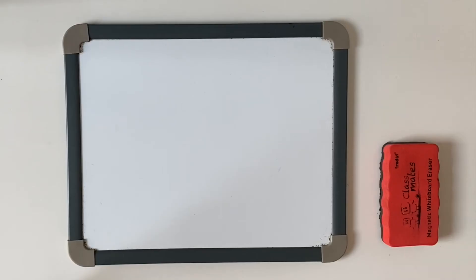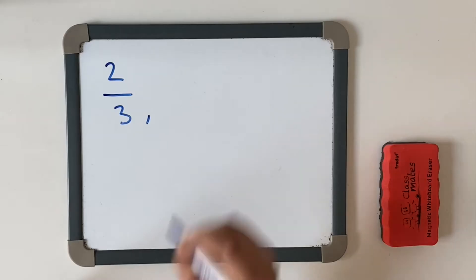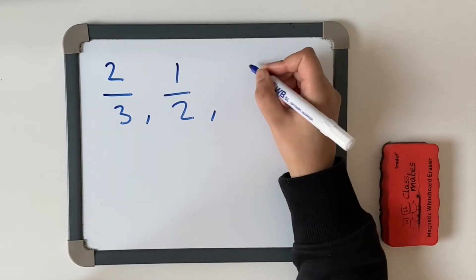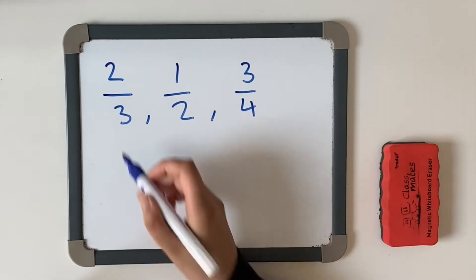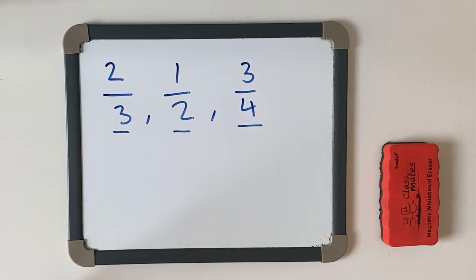My first example is going to be two-thirds, we're going to have a half, and our final one is going to be three-quarters or three-fourths. Now, we need to change the denominators first into a common denominator, and by doing so, we need to find the least common multiple. Let's focus on our two-thirds first. We're going to find the multiples.